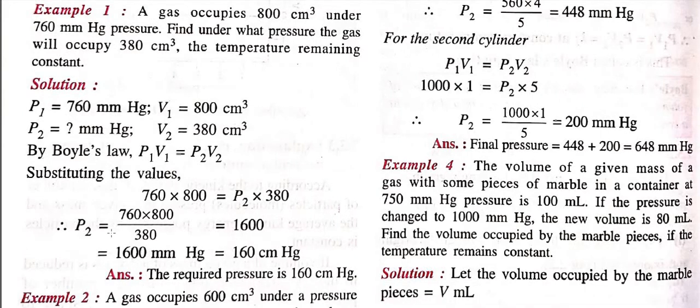So, when you just simplify it, p2 will be equal to 760 into 800, and this 380 will come down.